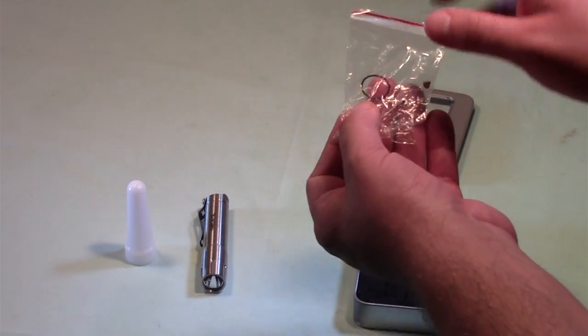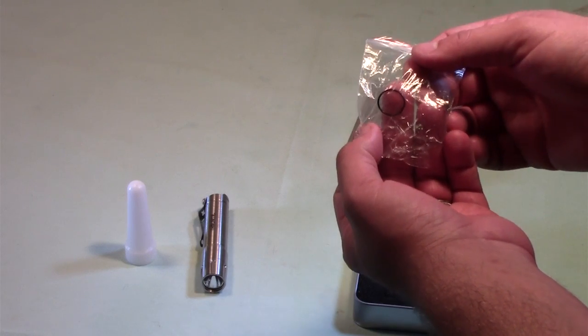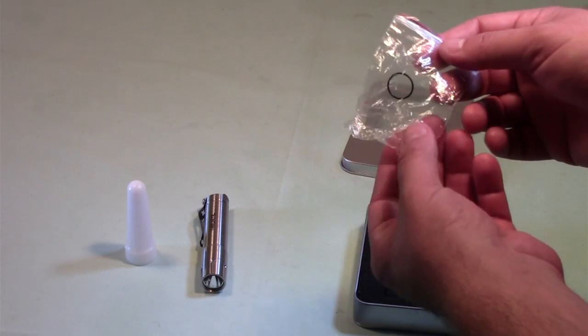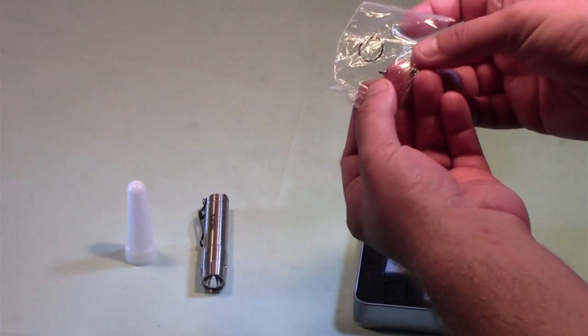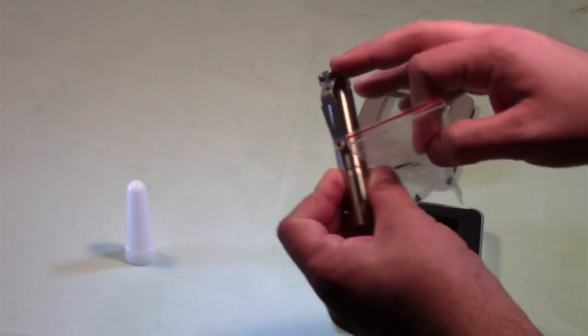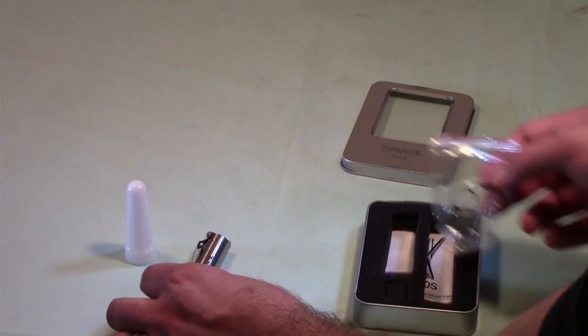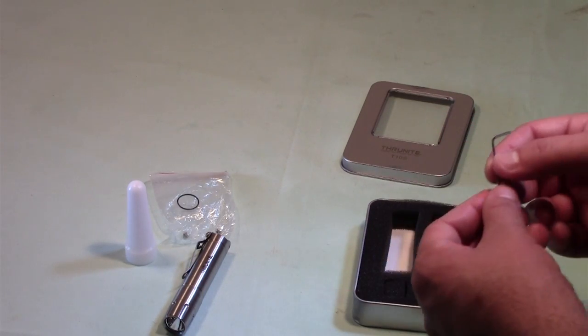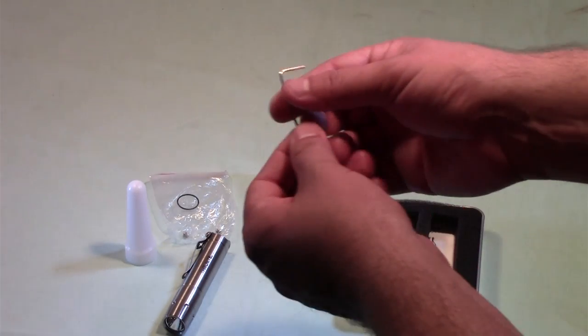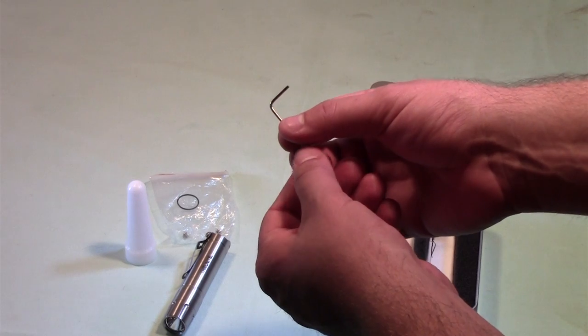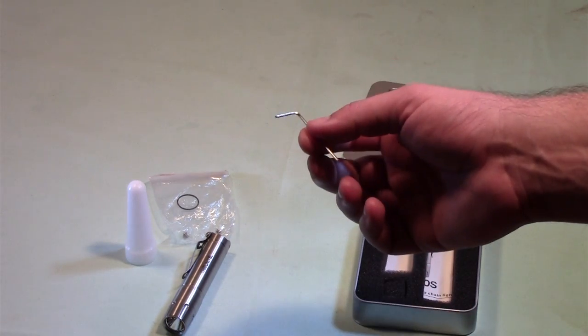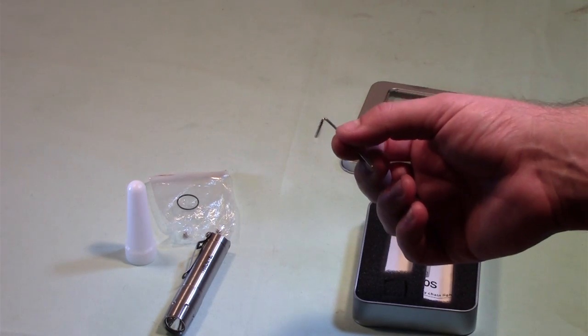Comes with a spare O-ring here for moisture protection for the battery compartments. Comes with two extra screws for the pocket clip. So in case you lose the screws that are in the pocket clip, you have two backups, which is handy. They're also considerate enough to actually throw in the Allen key that you need for the pocket clip screws, which is really handy.